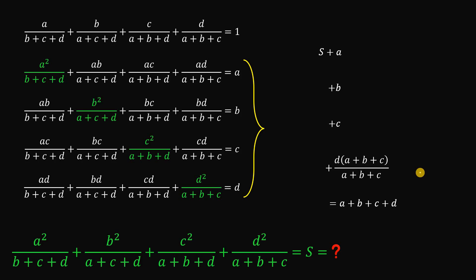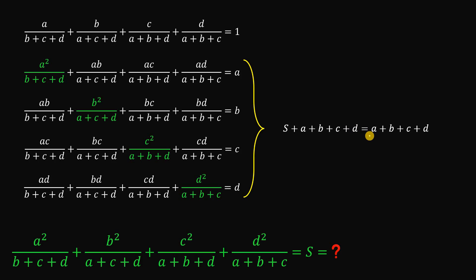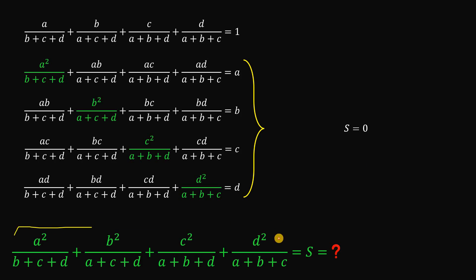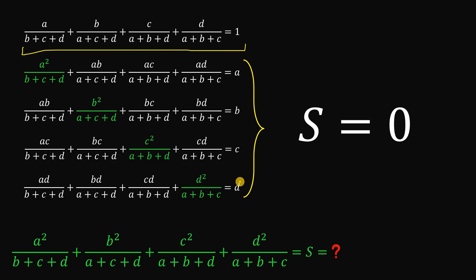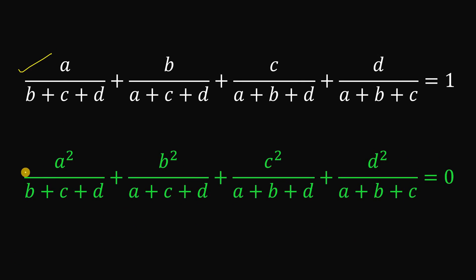So our equation becomes S plus a plus b plus c plus d equals a plus b plus c plus d. If we subtract a, b, c, and d from both sides, we eliminate them all. Therefore S simply equals zero. And since S is equivalent to our entire target expression, the answer is: given the original equation equals one, the value of this expression equals zero. And with that, we are done.